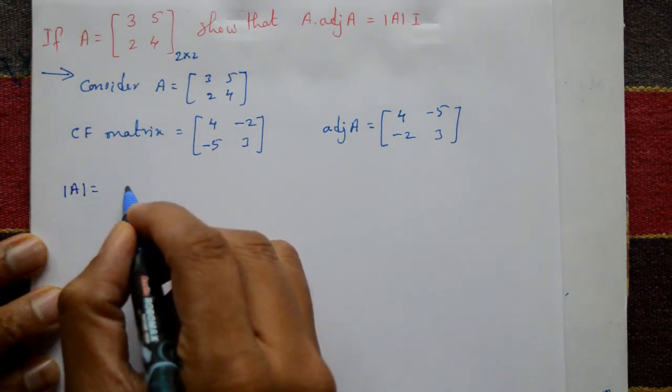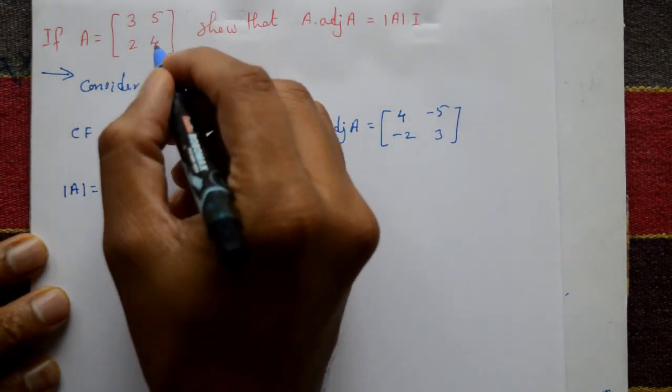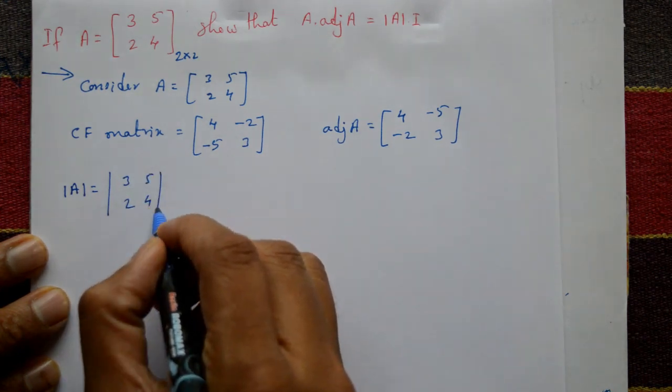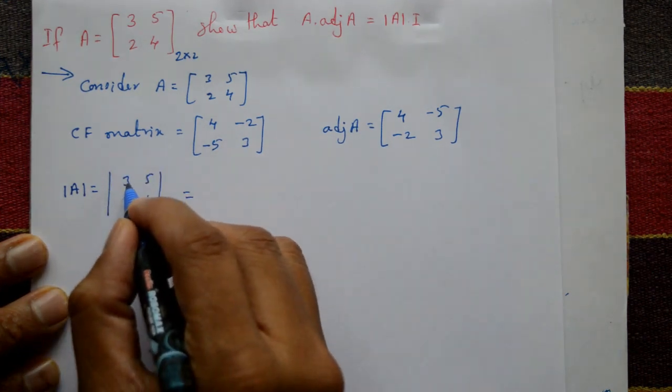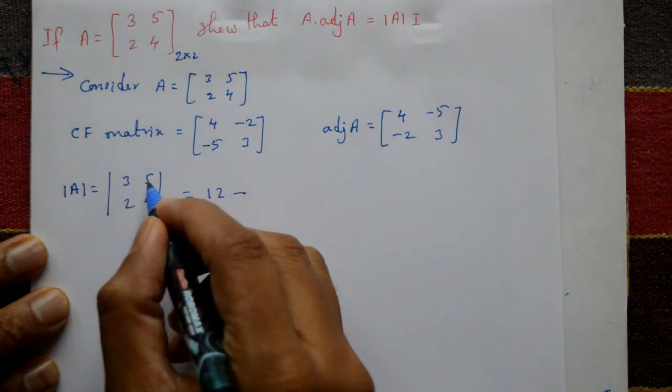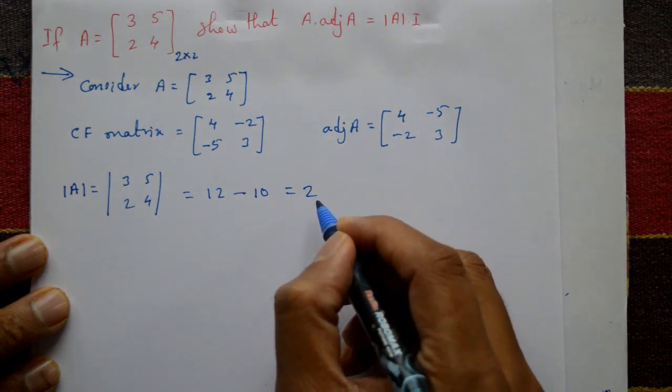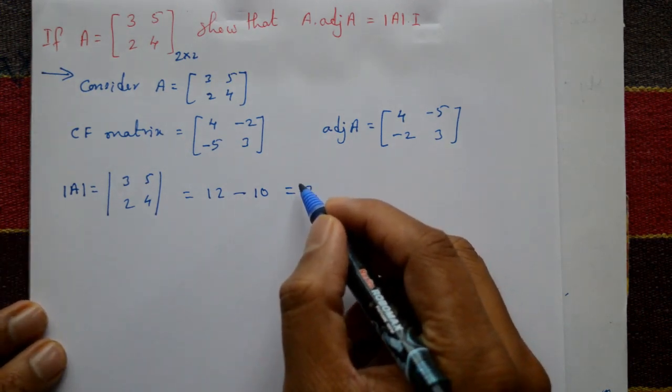Now require determinant of A. Determinant of A is equal to, take these elements 3 5 2 4. Now expand this determinant: 3 into 4 is 12 minus 2 into 5 is 10, and determinant of A is equal to 2. Means non-singular matrix, this is not singular.